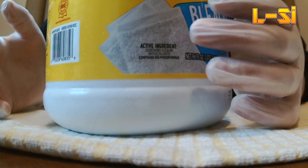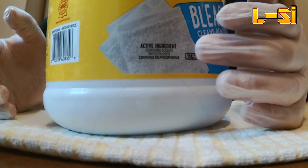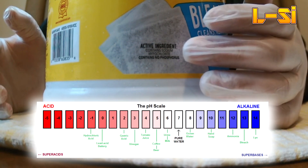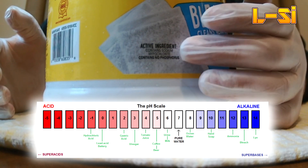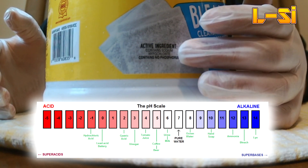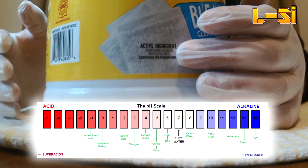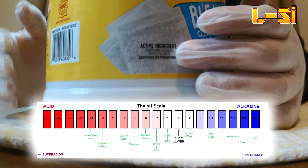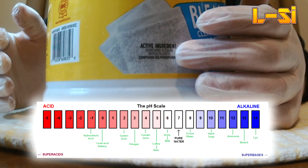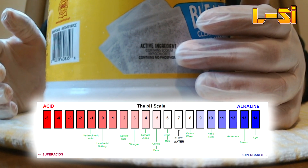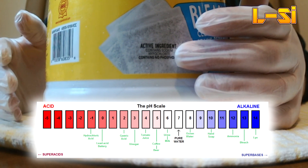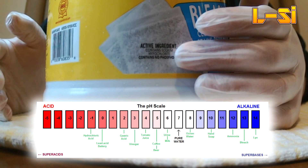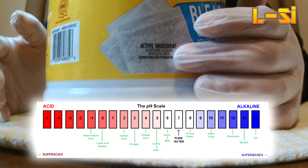Now, you may have heard of acids and bases. An acid is anything with a pH less than 7, with 7 being considered neutral — the pH of water. Anything higher than that, anything that is the opposite of acidic, is basic or alkaline. So the scale is between 0 and 14. Anything below 7 is acidic. Anything above 7 is basic.